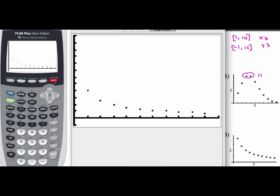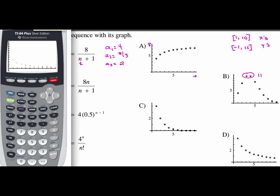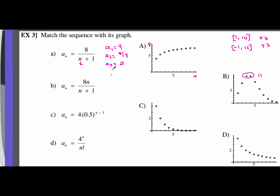That formula matches closest with graph D. Make sure you put parentheses around the numerator and denominator when typing into the graphing calculator. Type in each of the four formulas and check your answers — the correct matches are: d, a, c, b.